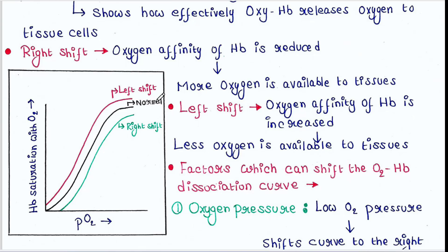The green curve represents the right shift. Here the oxygen affinity of hemoglobin is reduced, which means oxygen from the hemoglobin is dissociated — more oxygen is available to tissues.